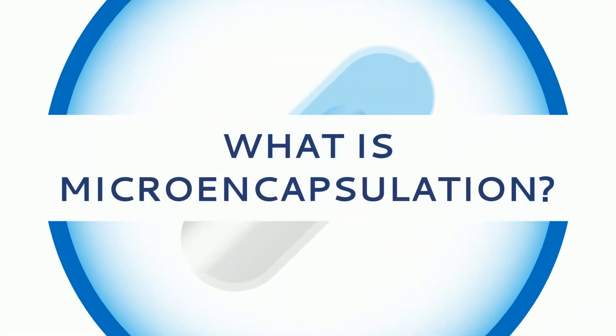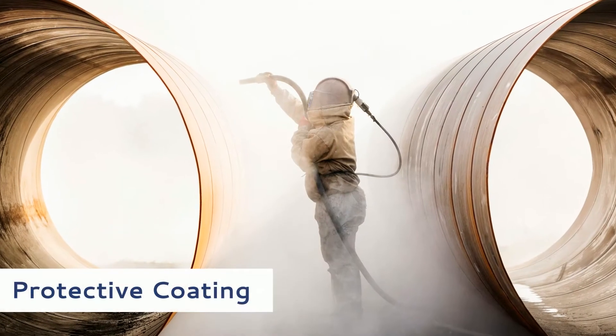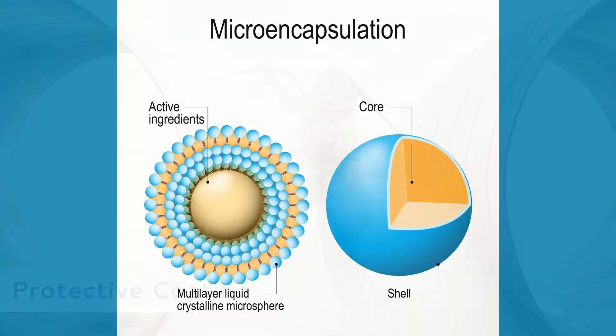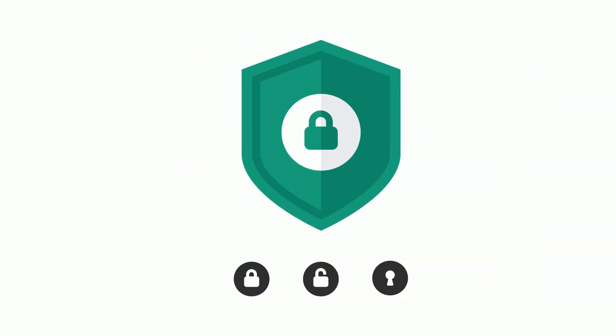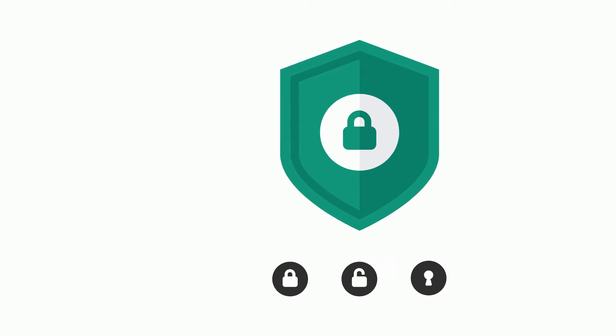Microencapsulation is a process by which we apply a protective coating called a matrix around a small particle called the core or the active. The matrix keeps an active ingredient locked in and stabilized until the release of the material is desired.